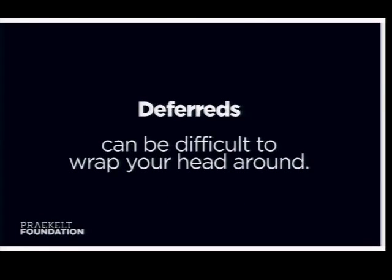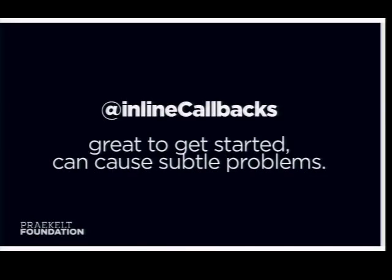The downside of Twisted is that deferreds can be quite difficult to wrap your head around. I've been working with it for a while and I'm by no means an expert. Especially when you're adding more than three callbacks to a deferred, getting a clear mental model gets a little tricky. Inline callbacks are great to get started with but can cause subtle problems — for example, if you have a for loop and you yield inside it, you're basically doing synchronous HTTP requests. In that case, inline callbacks is a bad idea and you need to start looking at deferred lists.